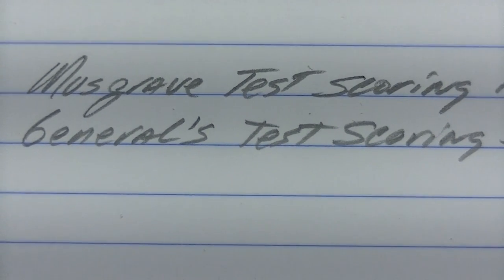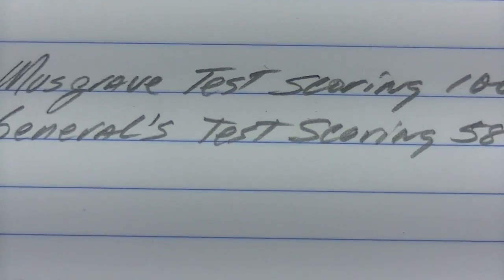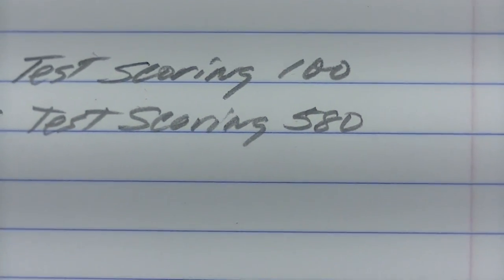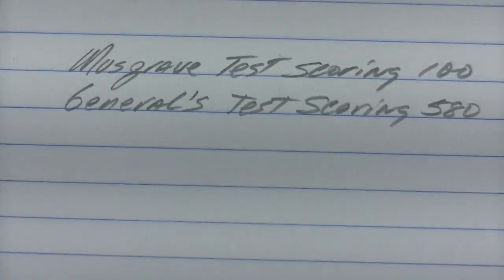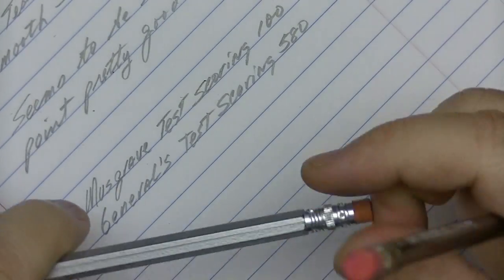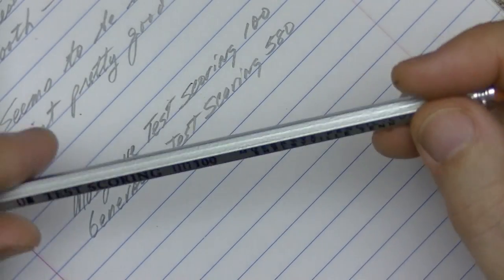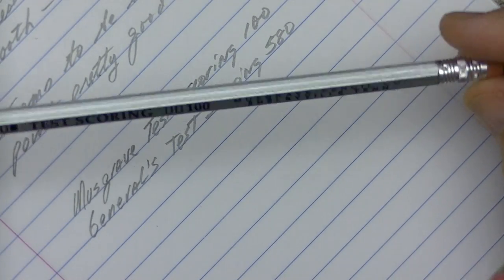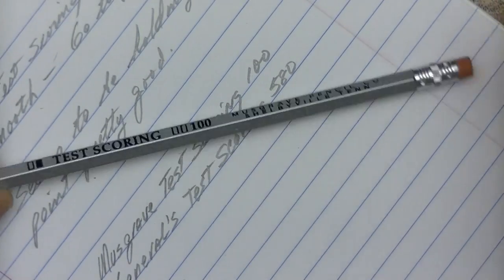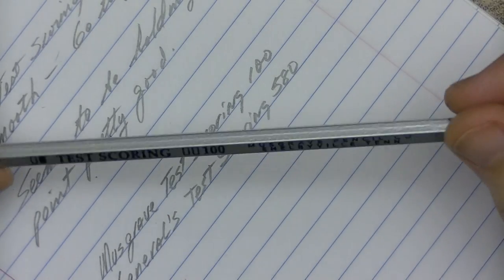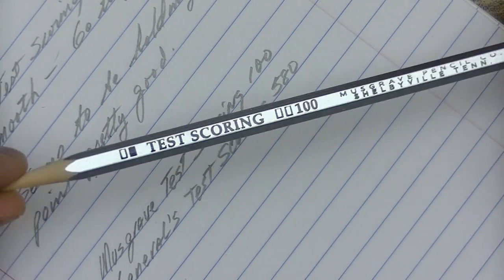Alright, now, let's see if you can tell the difference here. The Musgrave is clearly a darker pencil. And it is also a smoother pencil. So, if you want darker and smoother, and you don't mind having to sharpen a lot more, you would use this Test Scoring 100 from Musgrave.